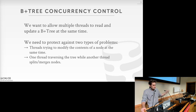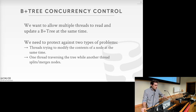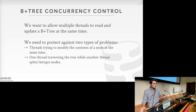We were discussing B+ tree concurrency control, where we want to allow multiple threads to read and update a B+ tree at the same time. This lets us utilize parallelism with many cores. But we need to protect against two problems: two concurrent threads modifying the contents of a single node, and one thread traversing the tree while another does reorganization — splitting, merging, or rebalancing nodes.